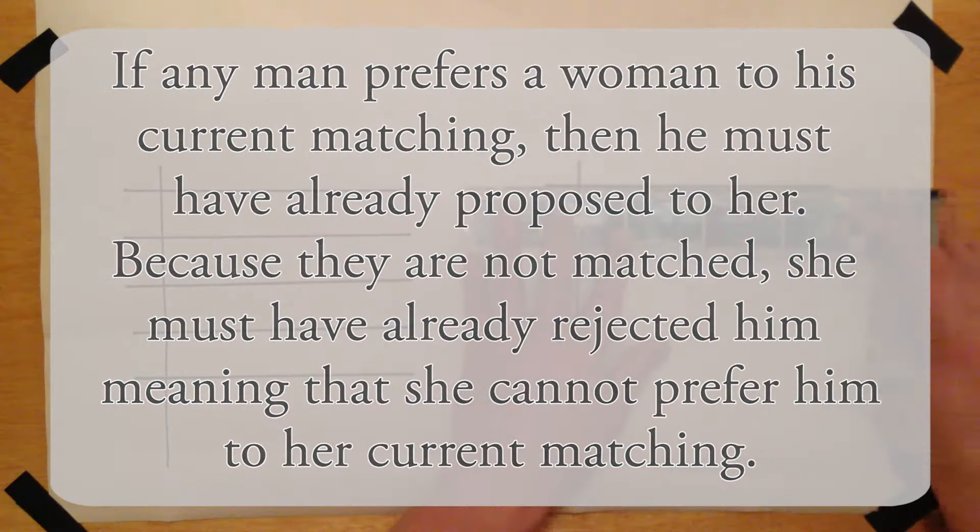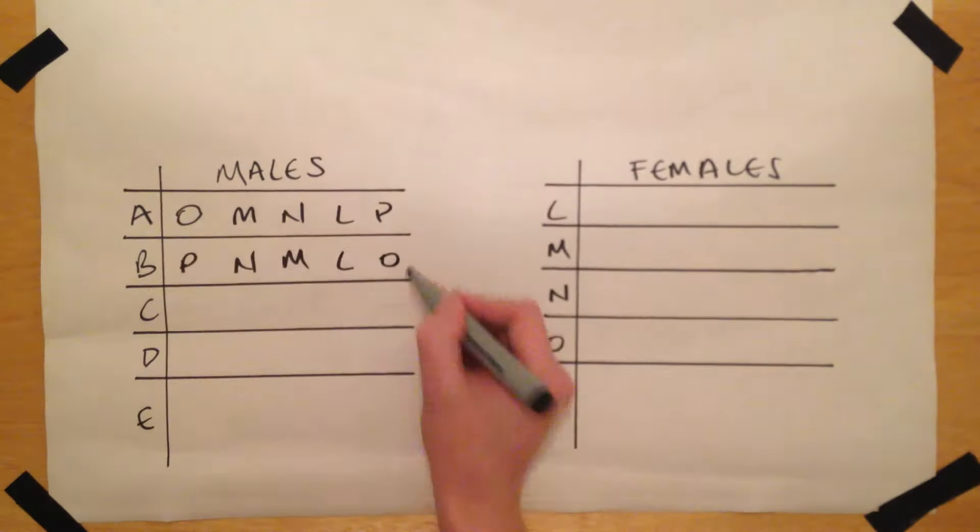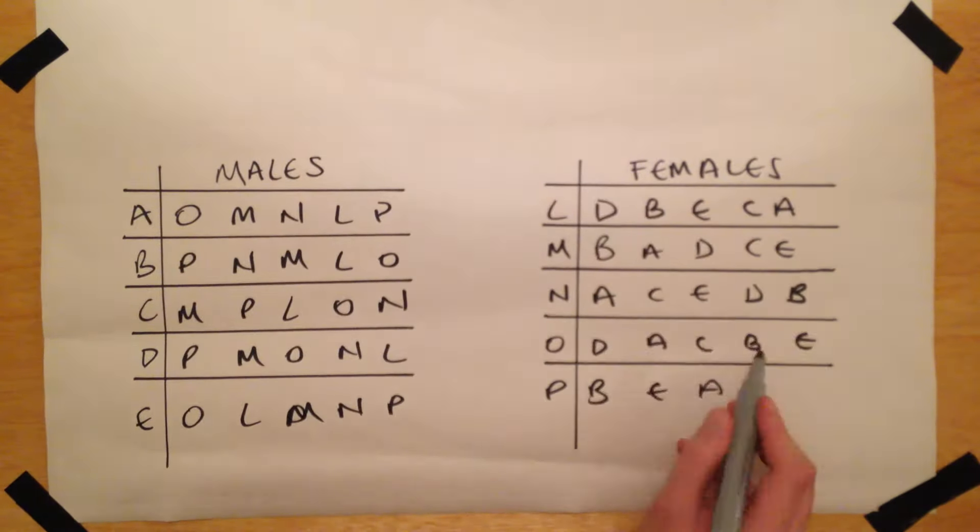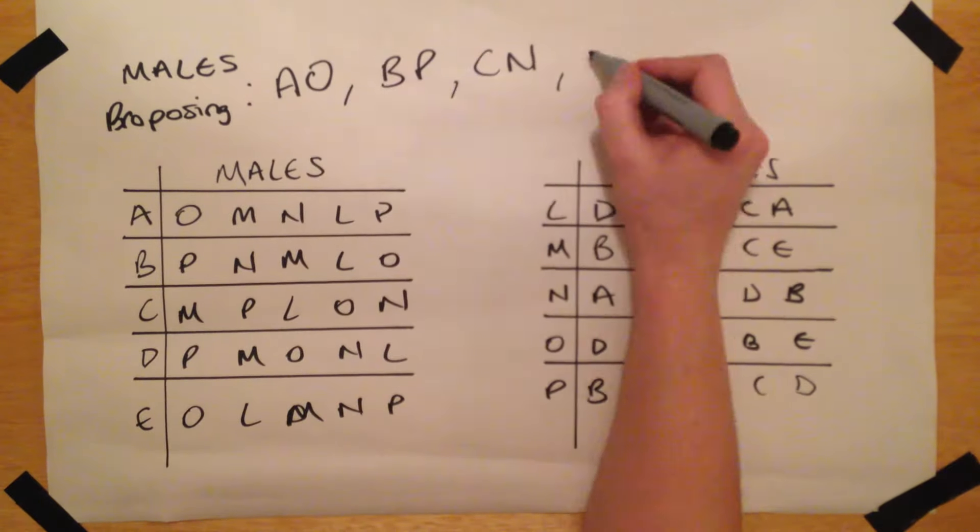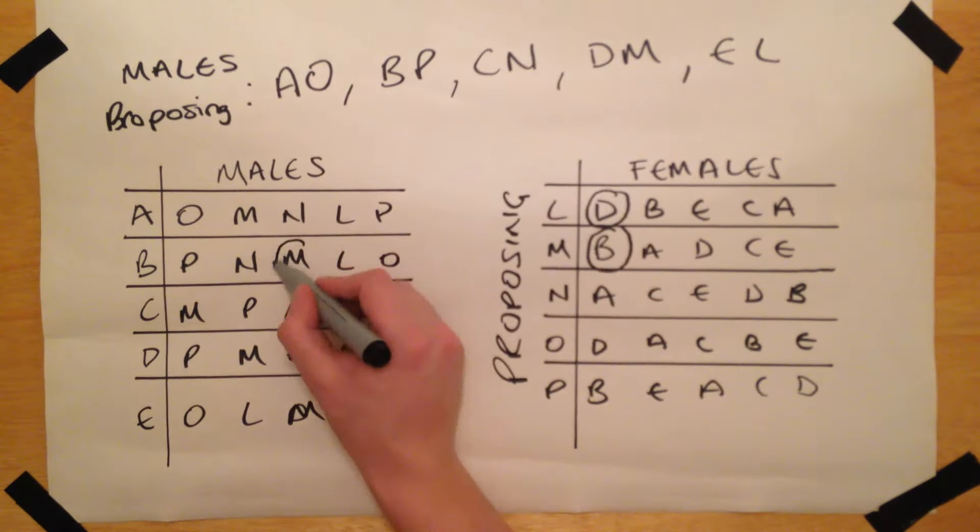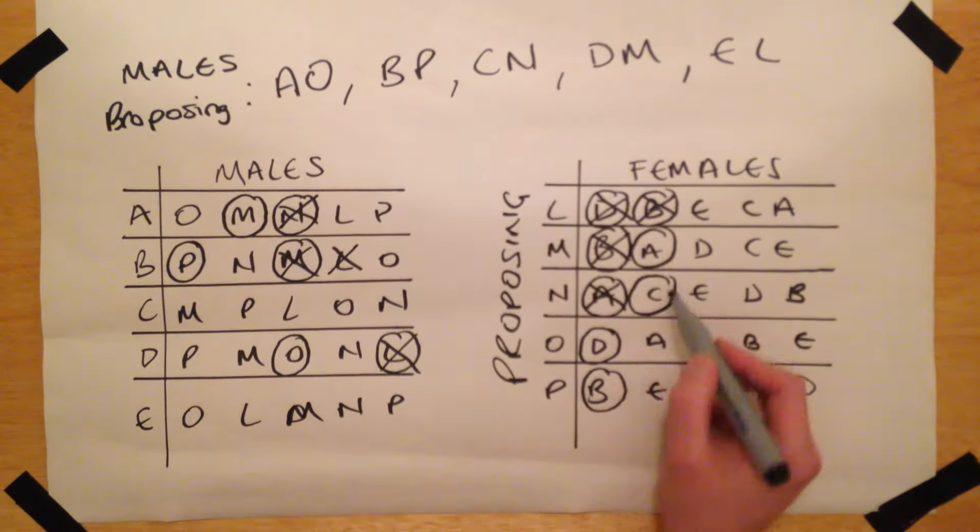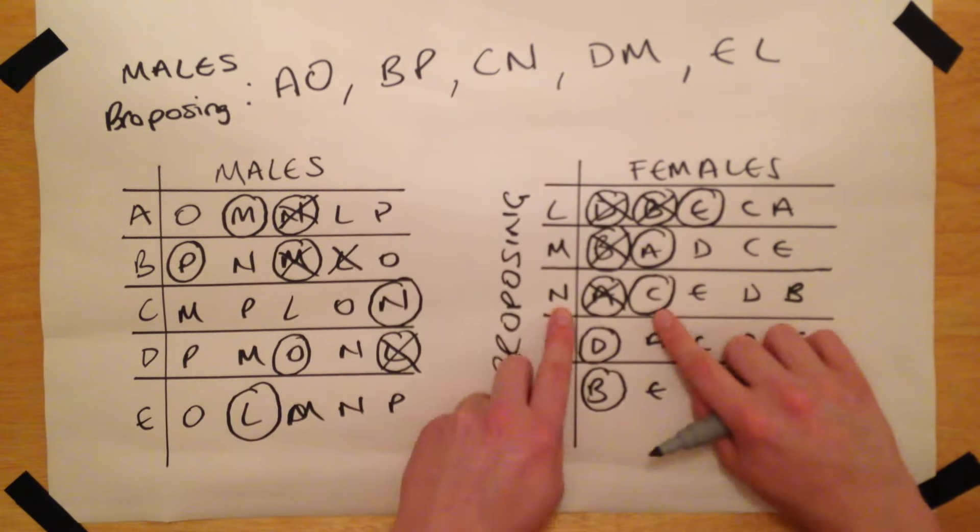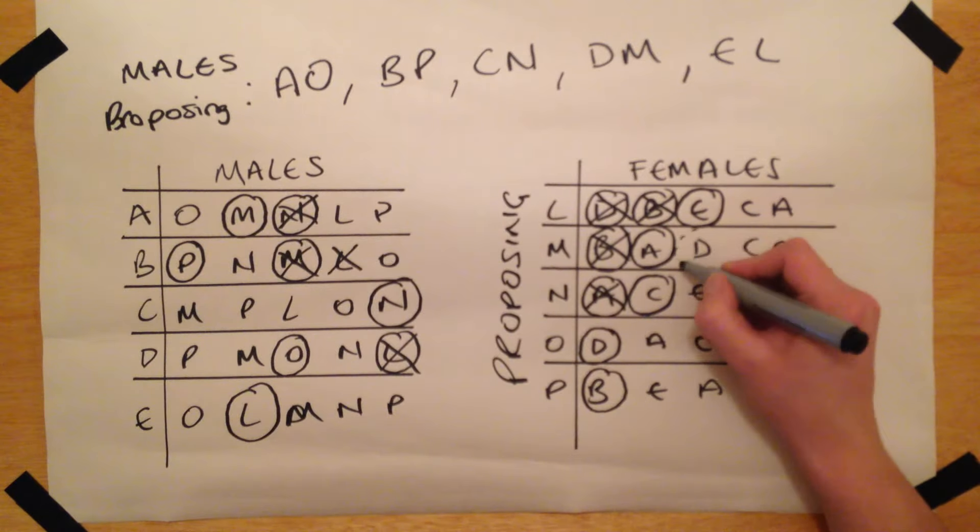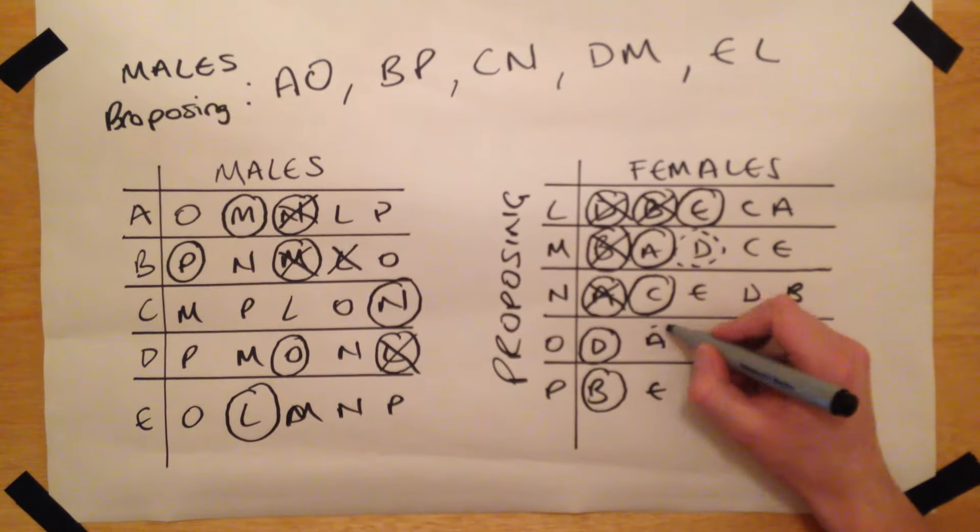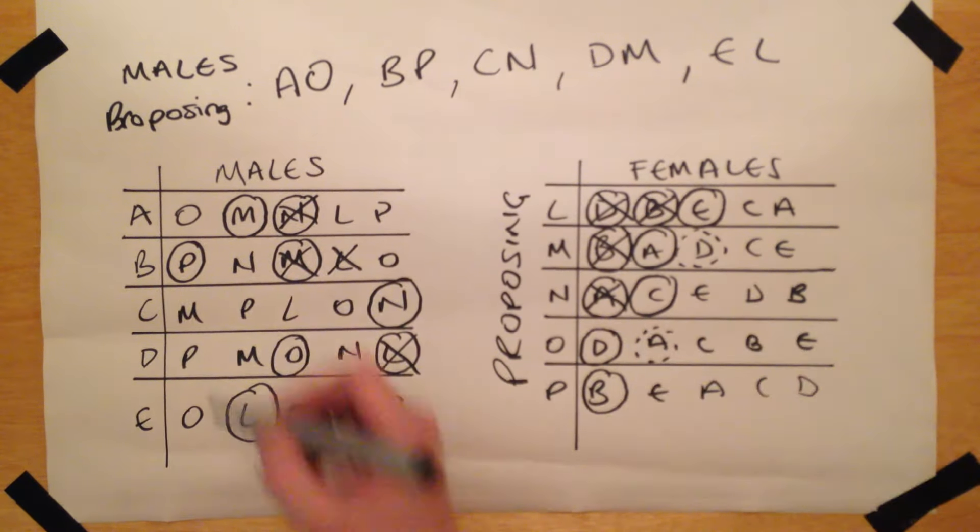As an interesting aside, if we set the women's group to be the proposers, then we end up with a slightly different matching. This matching is still stable, but the trend in this example, as in the majority of examples, is that the matching is optimal from the proposers' perspective. Notice that in this matching, M and O got a more favourable outcome than previously, while A and D ended up with a less favourable outcome.